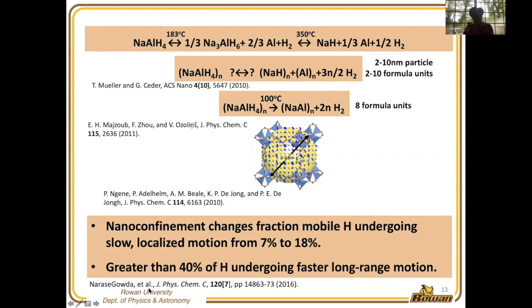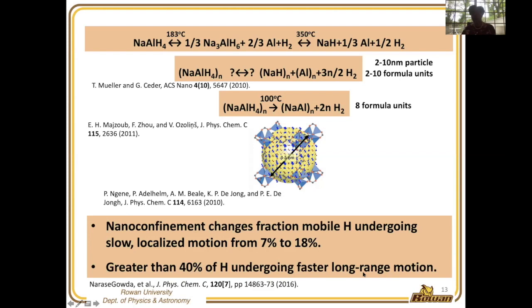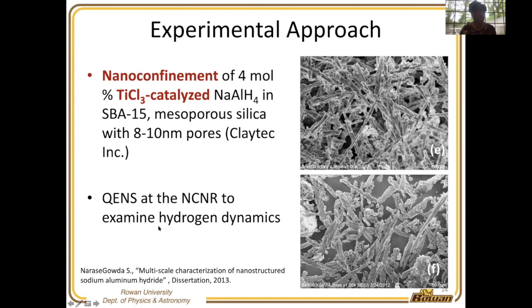We've already published results on the undoped material. What we saw specifically is that there were two ranges of motion—a long-range and a localized motion. The localized motion was slow, and the percent mobile hydrogen went from 7% to 18% when going from micro to nano scale. Greater than 40% of hydrogen underwent this long-range faster motion. But now we wanted to look at what happens when we both nano-confine and catalyze the material, so we switched to mesoporous silica SBA-15, which has pore sizes around 8 to 10 nanometers.